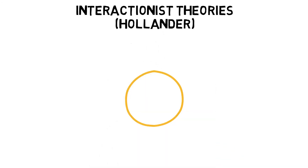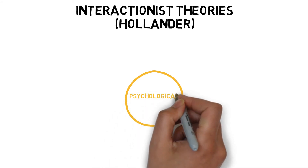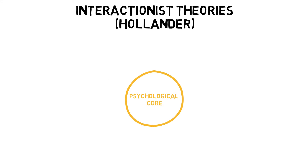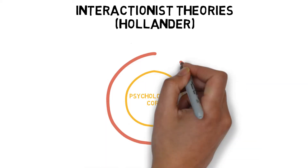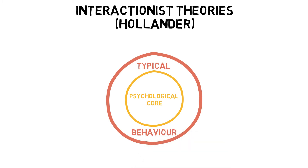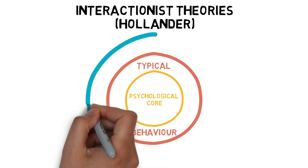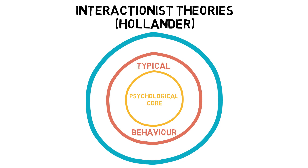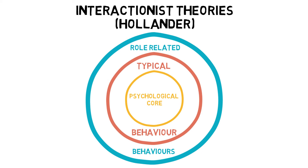Hollander outlined a series of rings to determine personality, with the inner ring being the most difficult to change. The psychological core is the real you — your fundamental views and beliefs are unlikely to change, such as what you deem to be fair play. Typical behavior is how likely an individual will respond to a situation, generally representative of the inner core, such as stopping boxing at the bell. Role related behaviors are changeable behavior depending on the situation, such as hitting an opponent after the bell if they did it to you in the previous round — this is the most changeable aspect of personality.